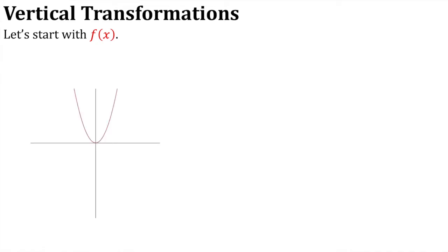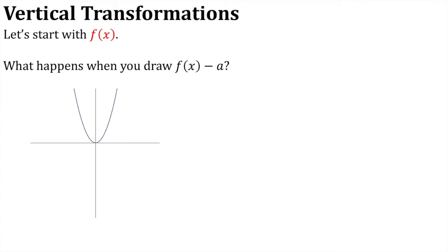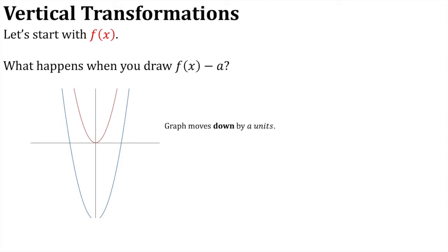Now, starting with f of x again — what happens when we draw f of x minus a? You can see that the graph is moving down by a units. So on f of x, if we had the point (x, y), that would transform to the point (x, y − a). That's the general form.